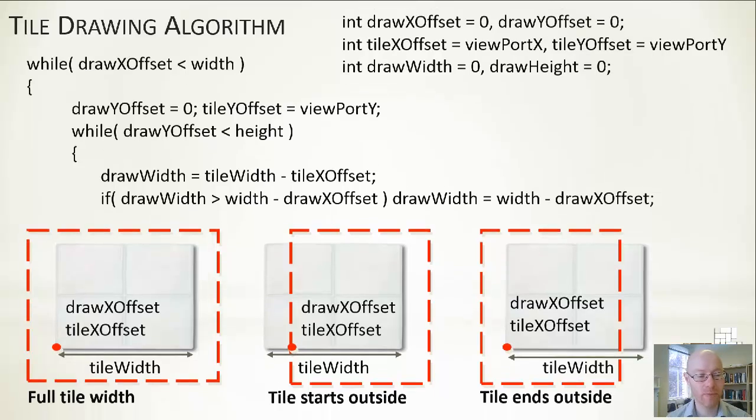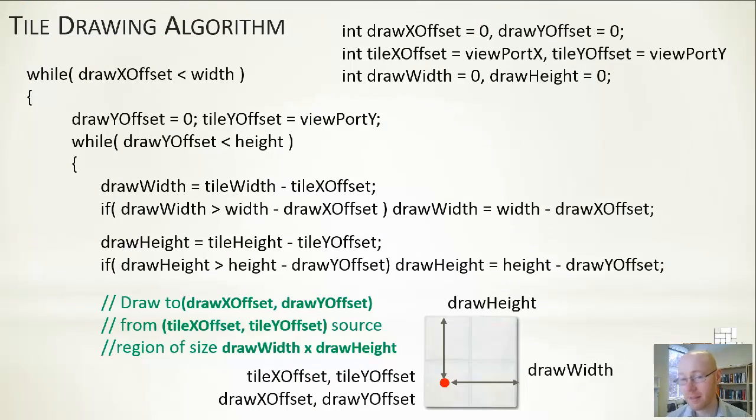We can do something exactly the same for the height, just looking at the other axis. And that's the hard work done. Then we effectively draw the things out using those properties. We're copying a region, potentially all of the source image, or if not a region of the source image, and we're drawing that to a portion or a section of our output viewport.